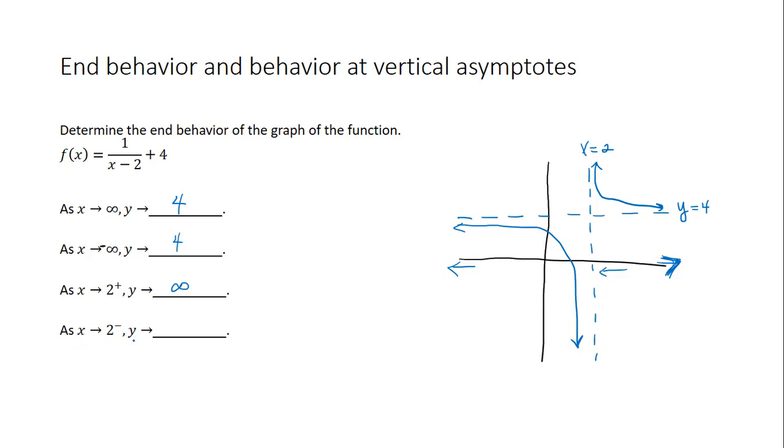As x approaches 2 from the left, that is we're coming into this vertical asymptote from the left side, notice that our graph is going down, which is going to negative infinity.